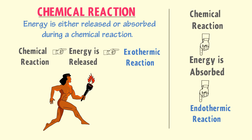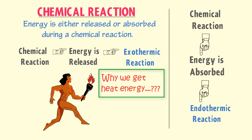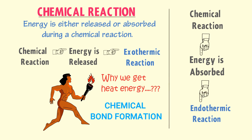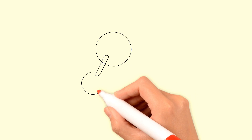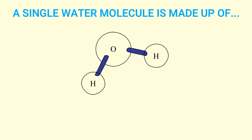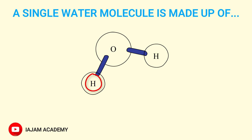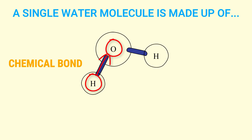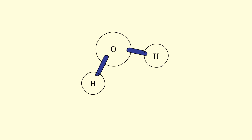Now if I ask you why you get heat energy when you burn something, to answer this question you must learn chemical bond formation among atoms. Let's consider the structure of water. A single molecule of water is made up of one oxygen atom and two hydrogen atoms. This hydrogen atom is attached to the oxygen atom due to a chemical bond, and this other hydrogen atom is also attached to the oxygen atom due to a chemical bond.